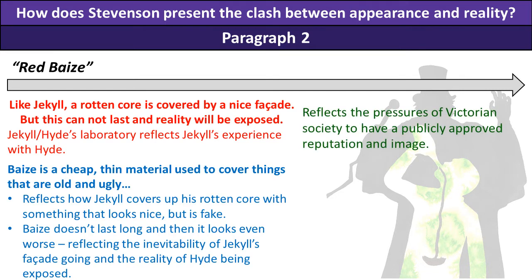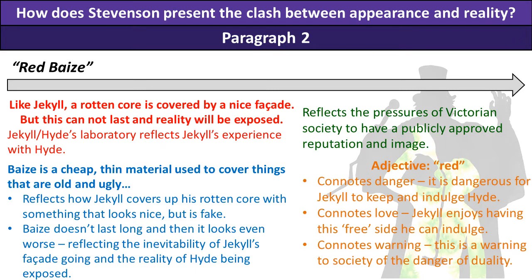This reflects the pressures of Victorian society to maintain a publicly approved reputation and image — the appearance has to look nice even if the reality is not. Looking at the adjective 'red': it connotes danger, so it is dangerous for Jekyll to keep and indulge Hyde. Red also connotes love, so Jekyll enjoys this free side he can indulge. But it also connotes warning — a warning to society of the danger of our dual lives and the danger of hiding our reality for longer than necessary. It should be understood and helped, not hidden.